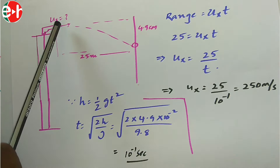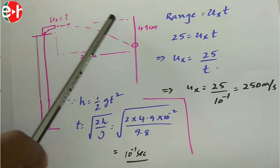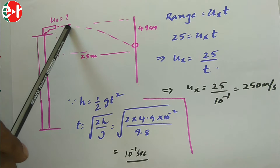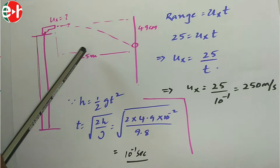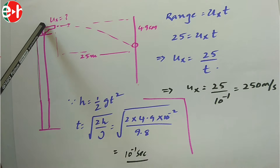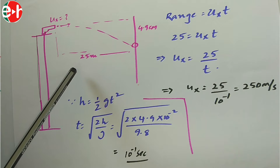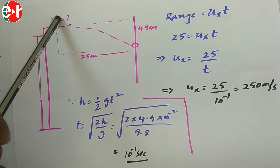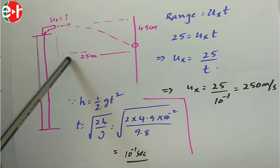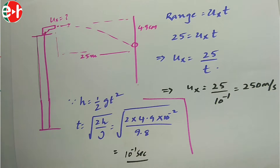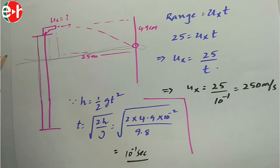A gun is placed at a certain height and a bullet is fired horizontally. It hits a screen 4.9 centimeters below the level of the gun. The distance between the tower and the screen is 25 meters — this is the range. We need to find the muzzle velocity Ux. Treating this as a standard horizontal projectile, height H = 4.9 cm and range R = 25 m.